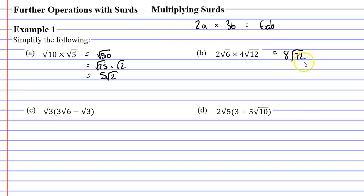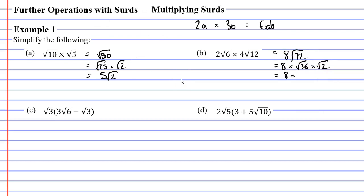We now need to simplify this, so we're thinking of a perfect square that fits into 72. I know that 9 fits into 72, but there's actually a bigger perfect square — 36 also fits into 72. So I'm going to rewrite this as 8 times the square root of 36 times the square root of 2, since 36 times 2 is 72. Because 36 is a perfect square, the square root of 36 is 6, and 8 times 6 is 48, giving us 48 root 2.